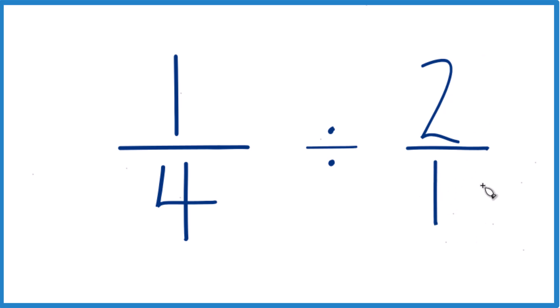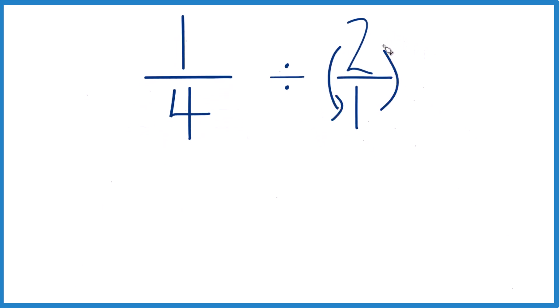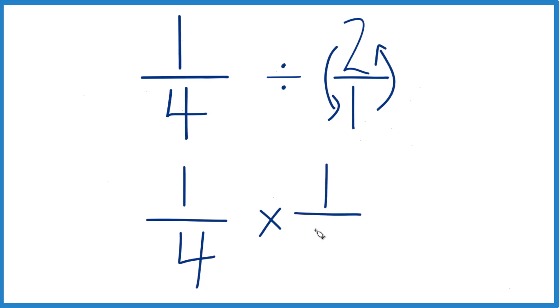Next we're going to take the reciprocal of two over one. So the numerator, that comes down, the denominator, that goes up. That way we could say one-fourth, and instead of division, we're going to multiply by that reciprocal of two over one, or the reciprocal of two. So two goes to the bottom, one goes to the top, and we get one over two. That's just one-half.